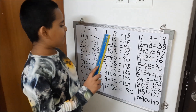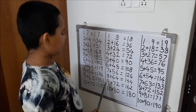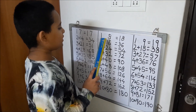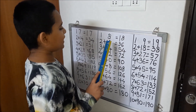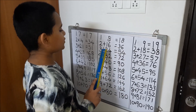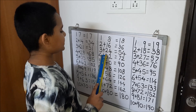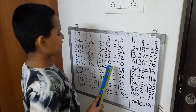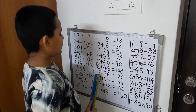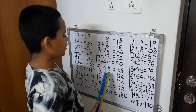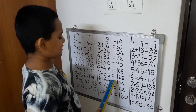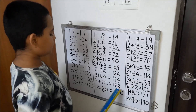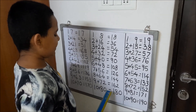For the 18 times table, first we have to write 1 to 10 numbers in the left side, and then we have to write the 8 times table in the right side. 18×1 is equal to 18. 2 plus 1 is equal to 3, write 6. 3 plus 2 is equal to 5, write 4. 4 plus 3 is equal to 7, write 2. 5 plus 4 is equal to 9, write 0. 6 plus 4 is equal to 10, write 8. 7 plus 5 is equal to 12, write 6. 8 plus 6 is equal to 14, write 4. 9 plus 7 is equal to 16, write 2. 10 plus 8 is equal to 18, write 0.